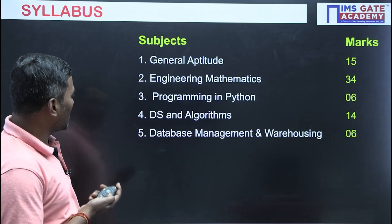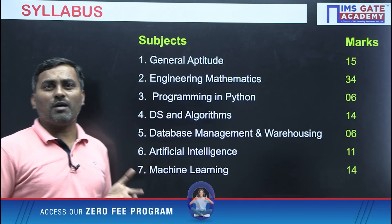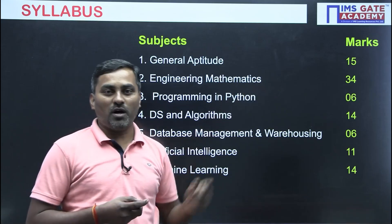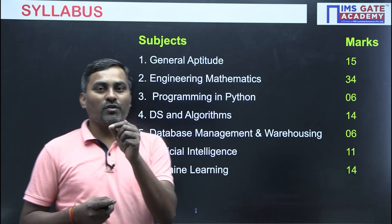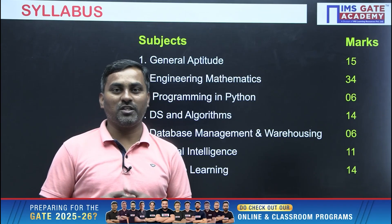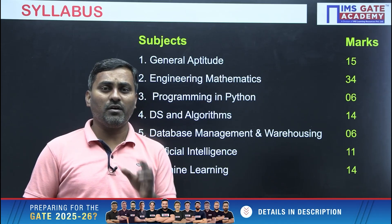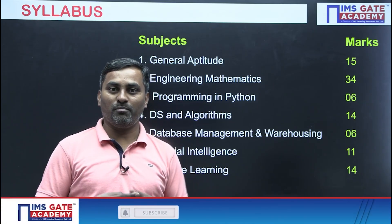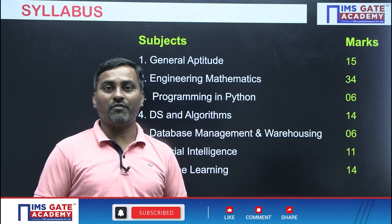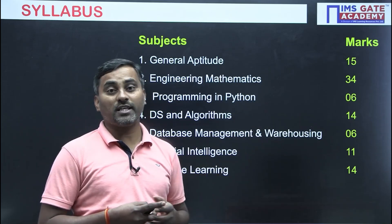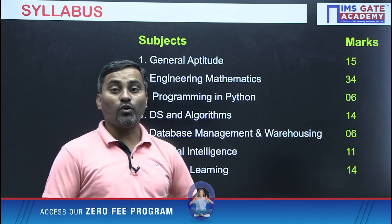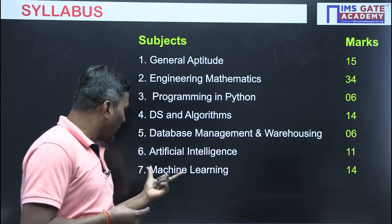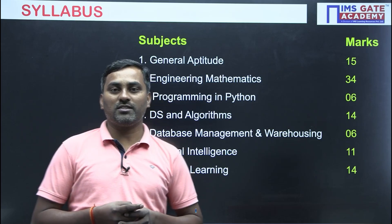The syllabus for the DA paper — General Aptitude is common, and we expect 15 marks from this. Engineering Mathematics is a very strong paper in DA: 34 marks came on average last year, which was the first DA paper. Programming in Python yielded around 6 marks average. Data Structures and Algorithms gave 14 marks. Database Management with warehousing gave 6 marks. Artificial Intelligence gave 11 marks and Machine Learning 14 marks — so 25 marks from these new topics.